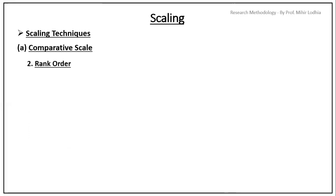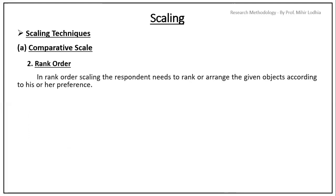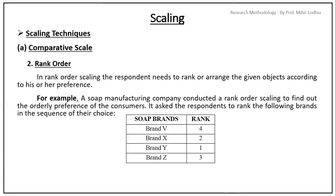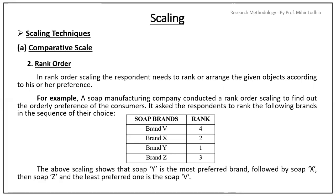Next one is rank order. In rank order scaling, the respondents need to rank or arrange the given objects according to his or her preference. For example, a shop manufacturing company conducts rank order scaling to find out the orderly preference of the consumers. It asks the respondents to rank the following brands in the sequence of their choice. The above scaling shows that shop Y is the most preferred brand followed by shop X and shop Z, and the least preferred one is shop V.